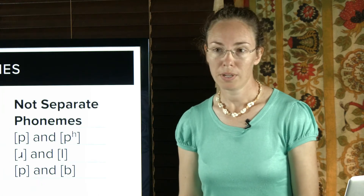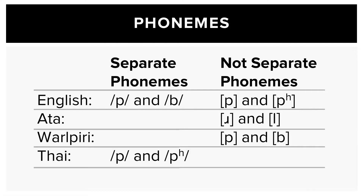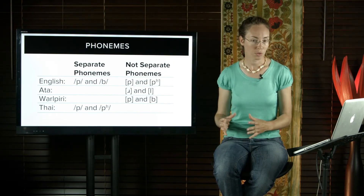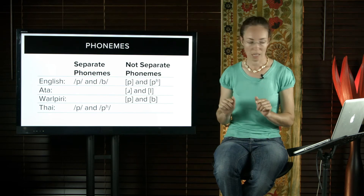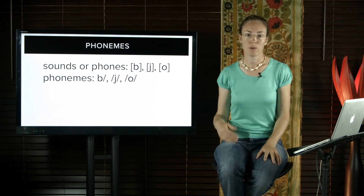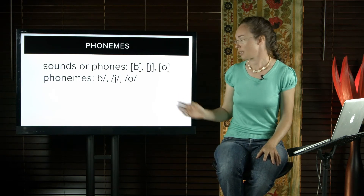In English, p and b are separate phonemes, but p and aspirated p are not. In Aata, r and l are not separate phonemes. In Walpiri, p and b are not separate phonemes. In Thai, p and aspirated p are separate phonemes. Notice that when we write the symbols for sounds or phones, we write them between brackets, but when we write the symbols for phonemes, we write them between slashes.